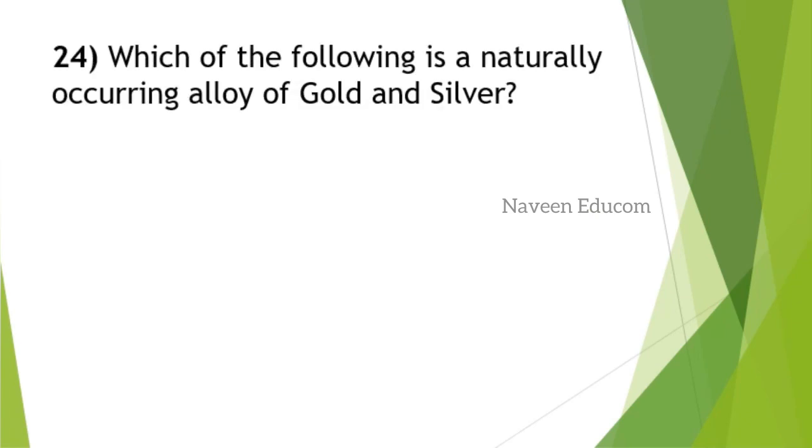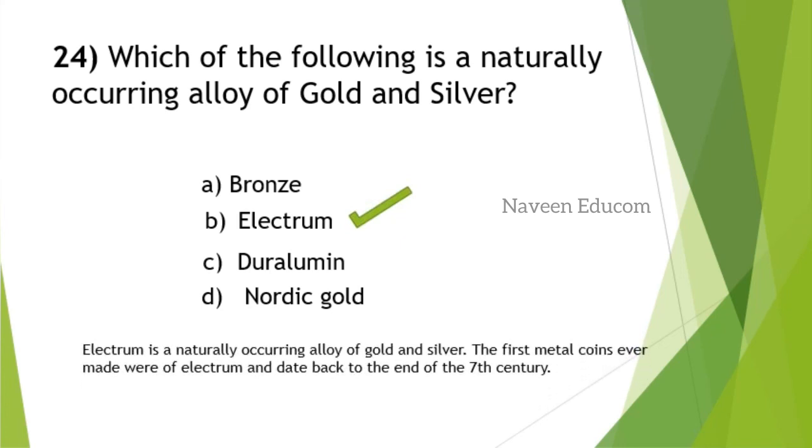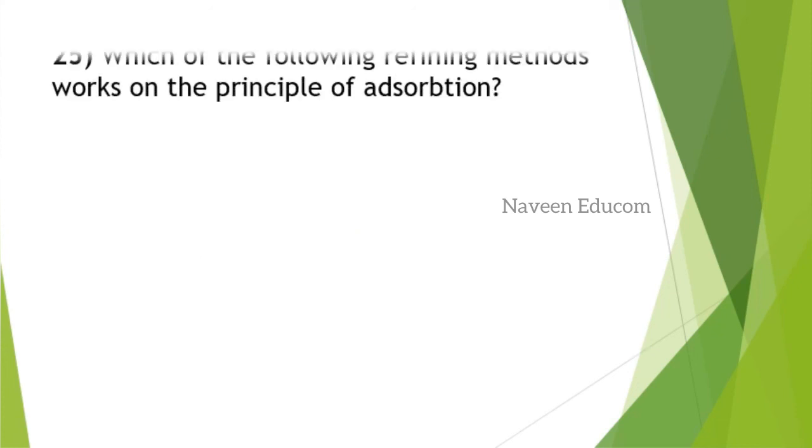Which of the following is a naturally occurring alloy of gold and silver? Options are bronze, electrum, ternary, nori gold. The answer is option B, electrum. Electrum is a naturally occurring alloy of gold and silver. The first metal coins ever made were of electrum and date back to the end of the seventh century. You're getting an additional point even from history.